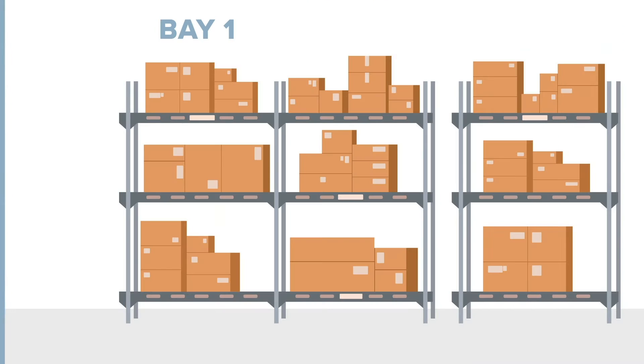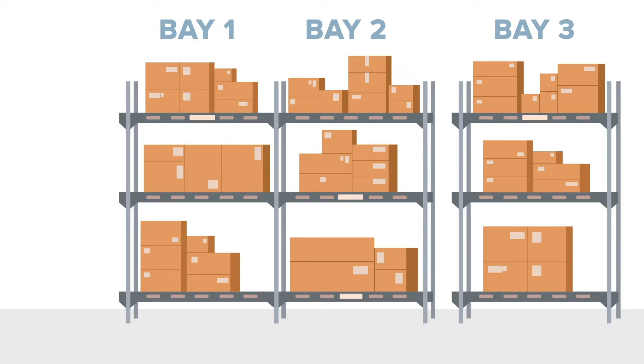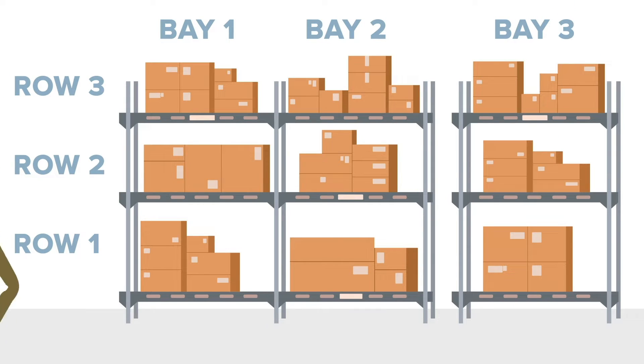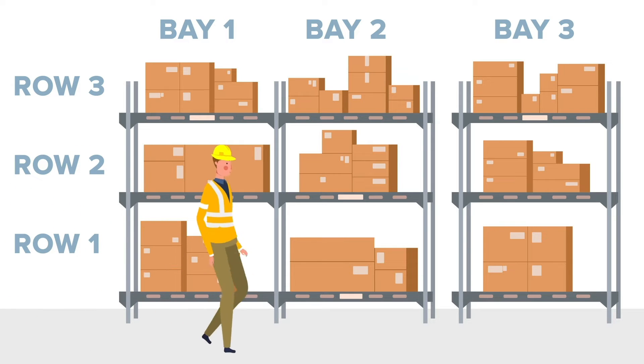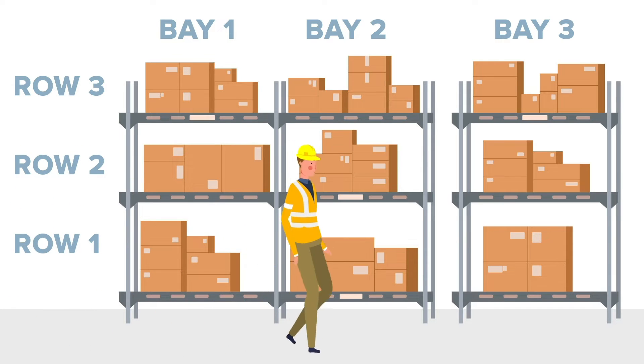Step 1: Define stock locations. Anywhere product might live should be named, from aisles on your sales floor to the shelf tucked away in the back of your office.